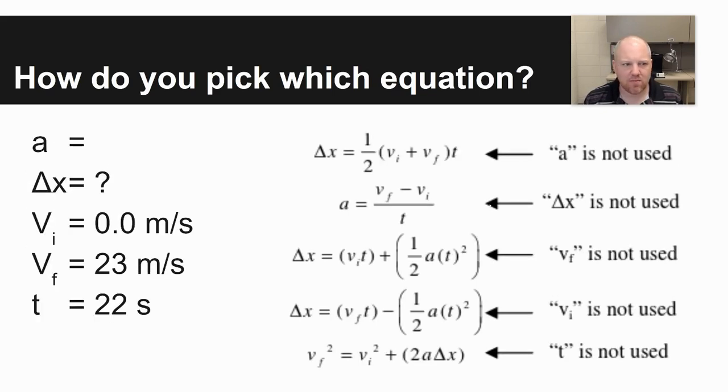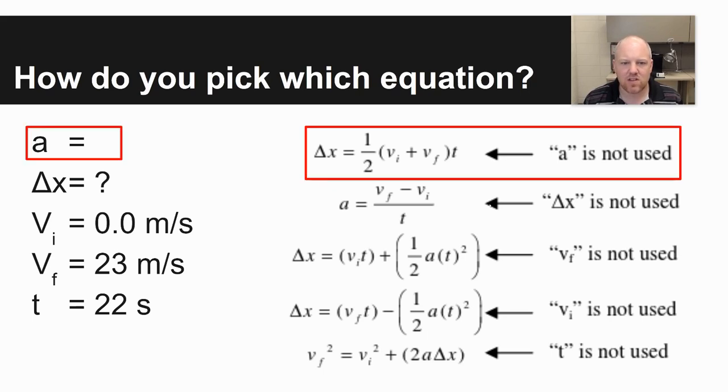Just an example problem. How do you pick which equation? If you are given in a word problem velocity initial, how fast at the beginning, velocity final, how fast at the end, and time, you're asked to solve for the total displacement. You're not using acceleration, and so you'd want to use the first equation up at the top.